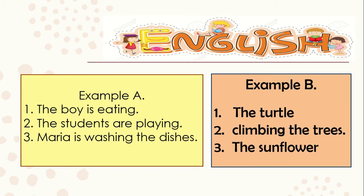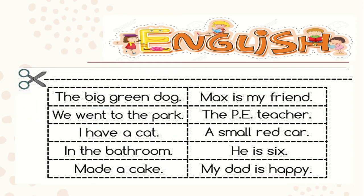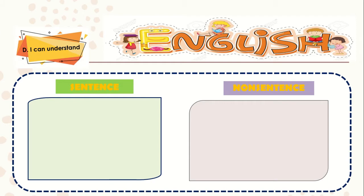Can you take a look at the two boxes in here? What can you say about example A? And how about example B? Very good! You saw the difference between the two already. Example A has a complete thought, while in example B, it doesn't have a complete thought. That's correct! On your learning packet, cut the strips and paste it on the next page. Take time in doing it. I know you can do it.